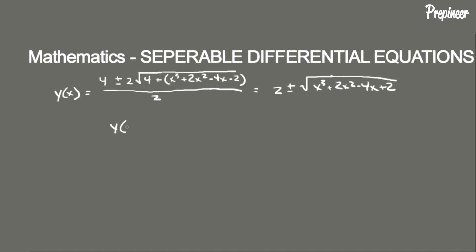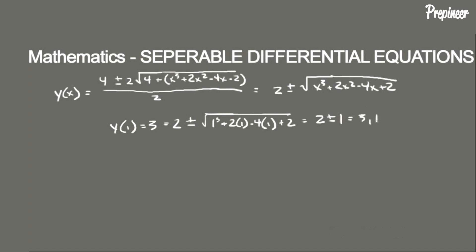We get y(1) equal to 3, which equals 2 plus or minus the square root of (1 cubed plus 2 times 1 squared minus 4 times 1 plus 2), which simplifies to 2 plus or minus 1. So our answer is either 3 or 1. Since y(1) must equal 3, it can't be 2 minus 1; it has to be 2 plus 1. So the plus sign is correct.